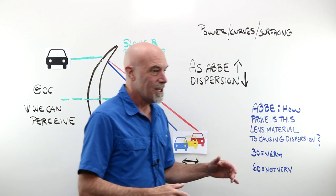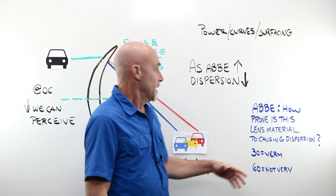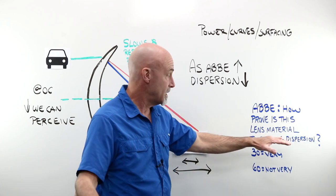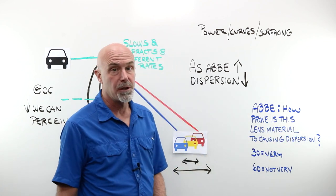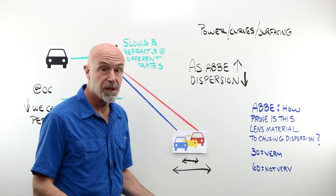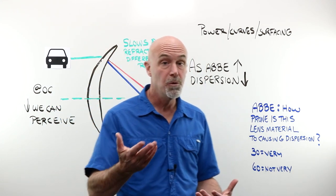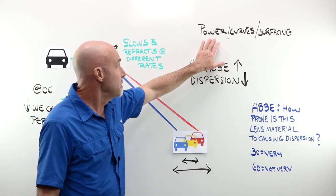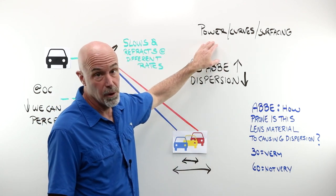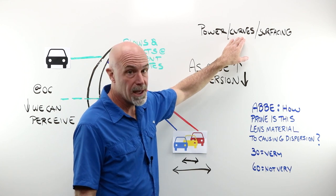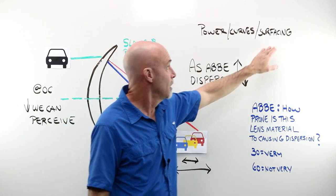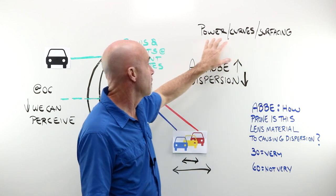So what is Abbe as a definition? It is answering the question numerically, how prone is this given lens material to causing dispersion? Or in other words, how bad is this going to be for a given lens material? Keep in mind, as power goes up, the likelihood of this goes up as well. The curves of the lens play a role here. Good base curve to power matching is critical to reduce this. Surfacing techniques to create the curves which give us the power.